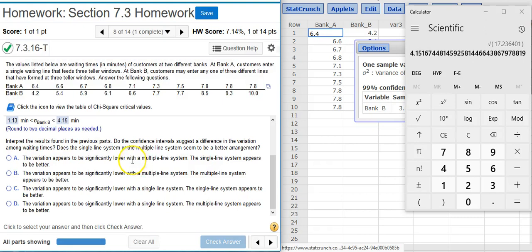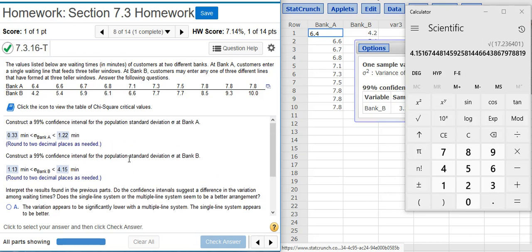And now the last part of the problem says, interpret the results found in the previous parts. Do the confidence intervals suggest a difference in the variation among waiting times? Does a single line system or the multiple line system seem to be a better arrangement? Well, let's scroll back so we can see the confidence intervals for the two different banks. And if we go back to our problem statement, we see that bank A customers enter a single waiting line. But at bank B, customers enter a multi-line system. So bank A is the single line system.